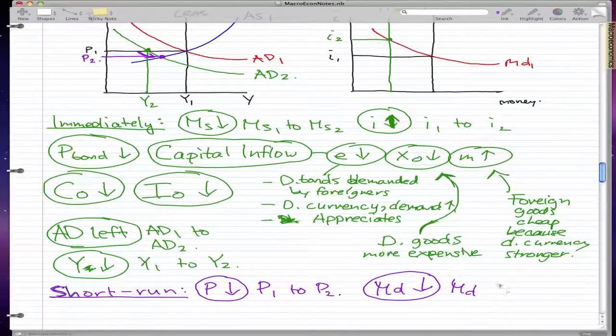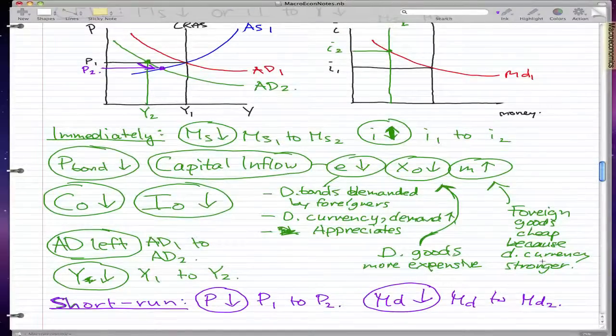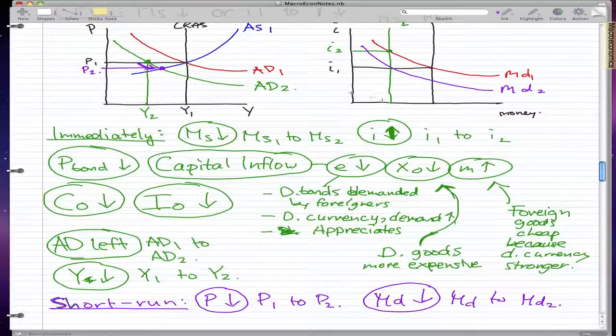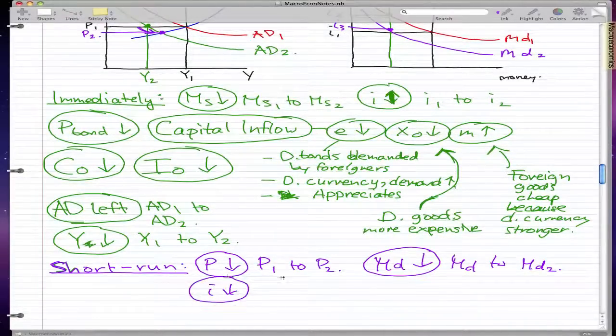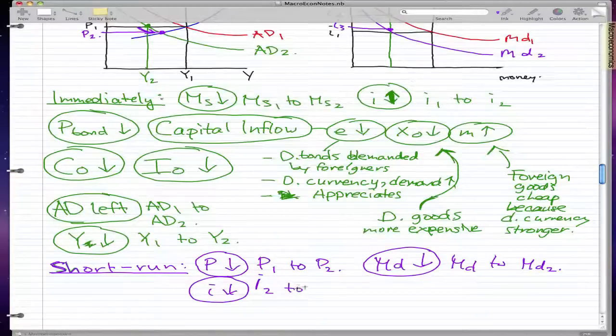And this causes our money demand, money demand to actually fall. From MD1 to MD2. So, our money demand will also move left. So, MD2. And the point where it intersects, comes our new interest rate. So, I3. So, interest decreases from I2 to I3. And, Y would rise from Y2 to Y3.